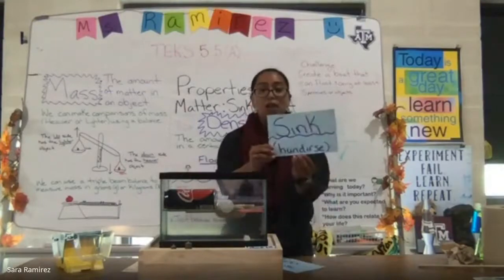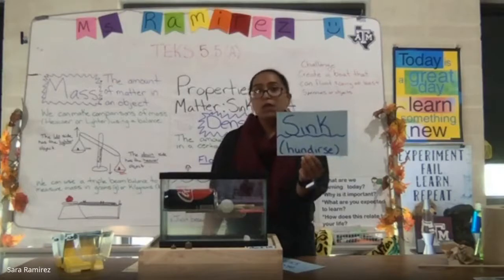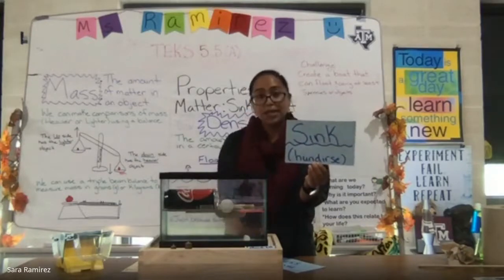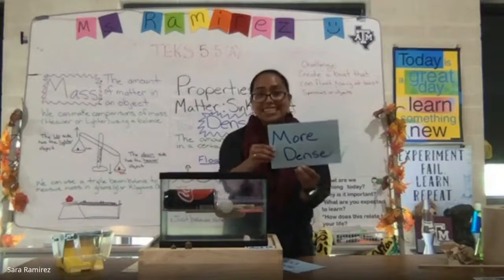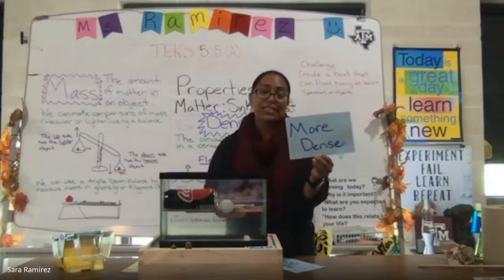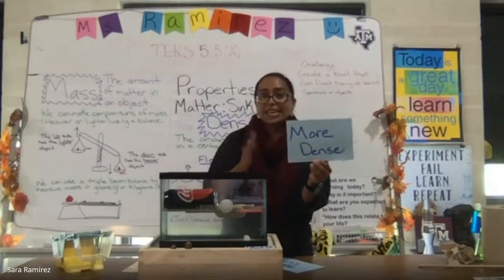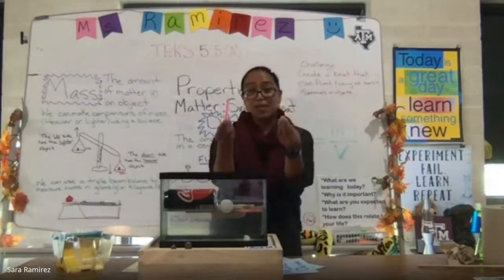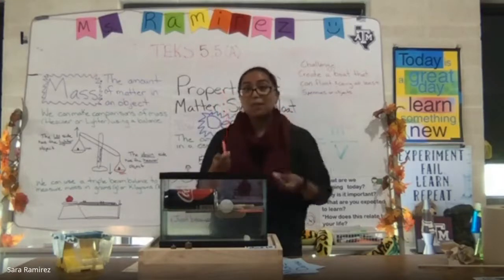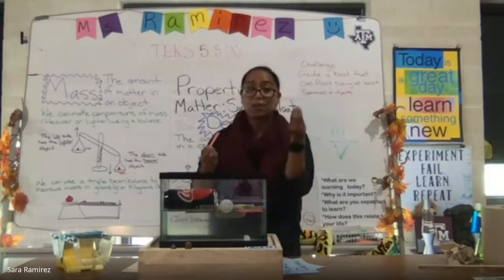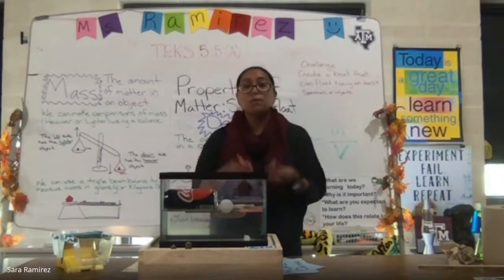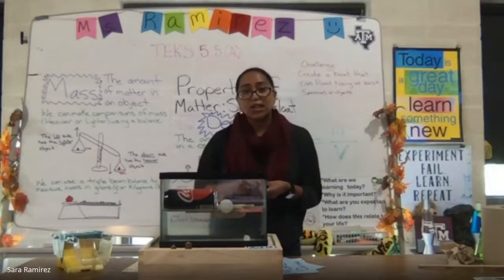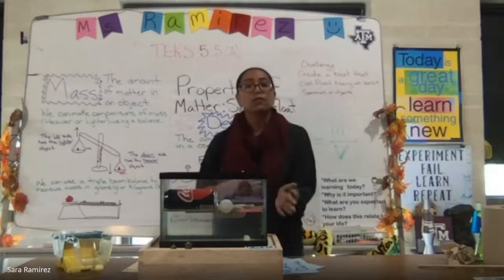The objects that sink are the bead and limestone. When objects sink, we say they are more dense than the liquid they are in. So the bead and the limestone are more dense than water. Density takes into account both the mass and the volume of an object. Remember our experiment with the candle and the bead — the candle had more mass, it was heavier than the bead, but yet our heavy candle floated and our bead sank. So just because an object is big or heavy doesn't mean it will automatically float.